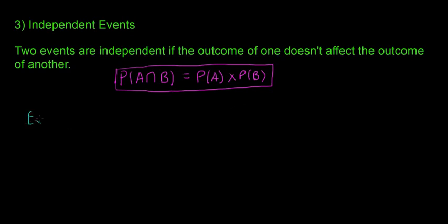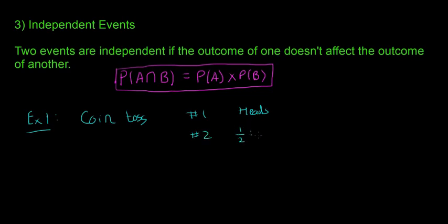Example one: a coin toss. A coin toss is going to be independent, because if you flip a coin and get heads on toss one, then for toss two it's still 50-50, still half and half. Just because you got heads one time doesn't mean the probability of getting heads next time is lower — it's the same every single time. So these are independent events.